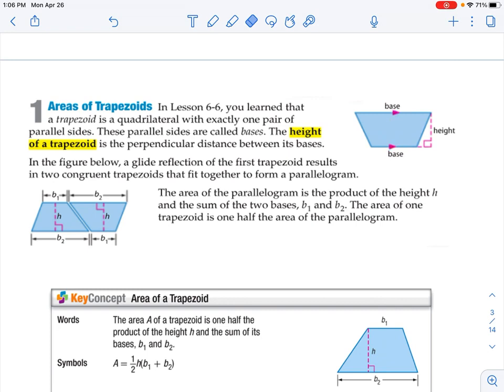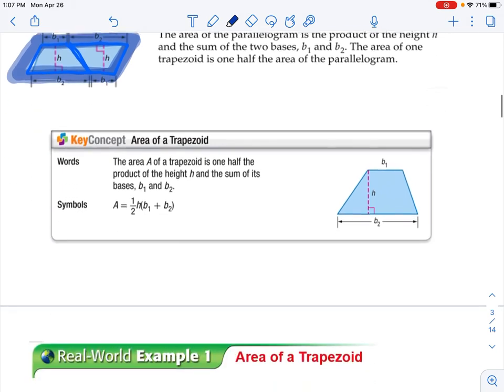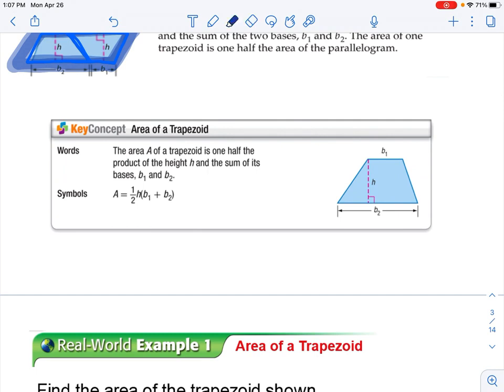In the figure below, a glide reflection of the first trapezoid results in two congruent trapezoids that fit together to form a parallelogram. We just have two of the same trapezoids. If you recall, the glide reflection, we translate and then reflect the same shape. If we fit them together, we create a parallelogram. The area of the parallelogram is the product of the height and the sum of the bases, base 1 and base 2. So, the area of only one of these trapezoids is half of the area of the parallelogram. So, we have our equation: area equals one-half times height times base 1 plus base 2 for our trapezoid.